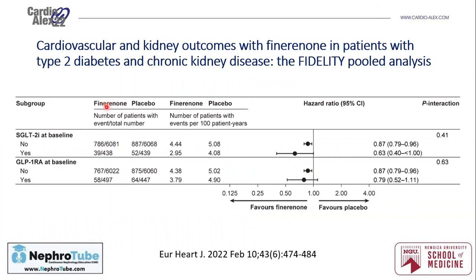Regarding the relationship between finerenone and SGLT2 inhibitors: in the Fidelity pooled analysis, patients who received both finerenone and SGLT2 inhibitors had more benefit than those on finerenone alone. This may be evidence that combining finerenone with SGLT2 inhibitors is more effective. It also confirms you can use one if you cannot use the other — for example, if a patient has a very high risk of hyperkalemia and cannot use finerenone, use SGLT2 inhibitors, and vice versa if the patient has recurrent UTI or mycotic fungal infections.